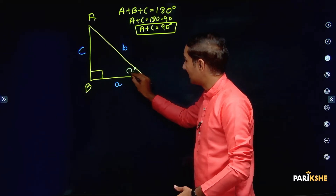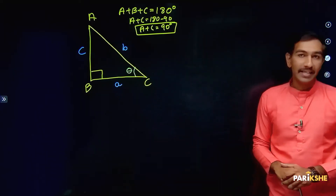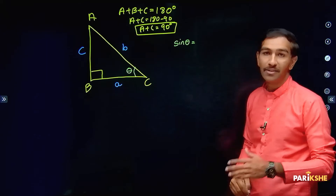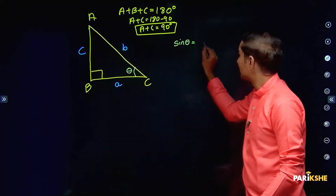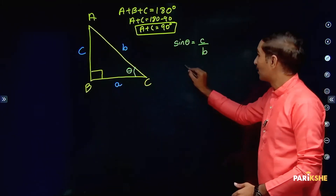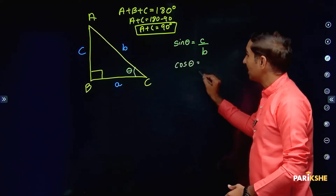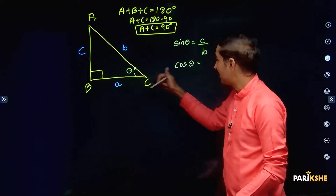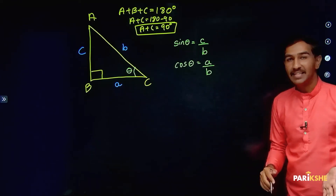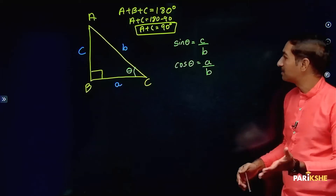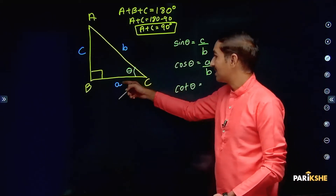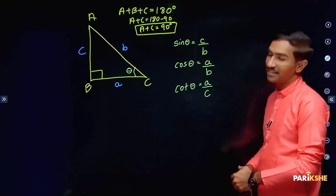Let us take angle C as theta. So when angle C equals theta, sin theta will be equal to opposite by hypotenuse — opposite side is C, hypotenuse is B. Similarly, cos theta equals adjacent by hypotenuse. Adjacent is A, hypotenuse is B. And tan theta equals sin by cos. Cot theta equals adjacent by opposite — adjacent is A, opposite is C.